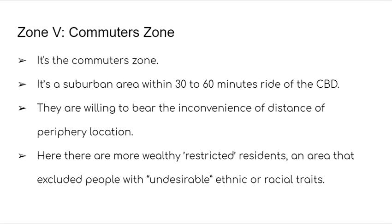Zone 5 is the commuter zone — the suburban area where people have to commute to the core, which may take 30 to 60 minutes of travel to the CBD. Residents are willing to bear the inconvenience of distance in exchange for living in a more comfortable, spacious place. These are often wealthy, restricted residential areas that tend to exclude people of undesirable ethnic and racial backgrounds.